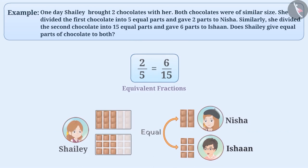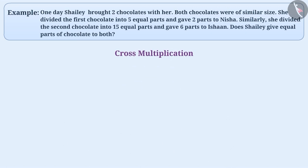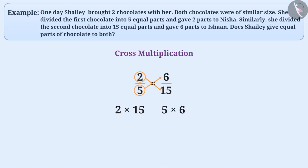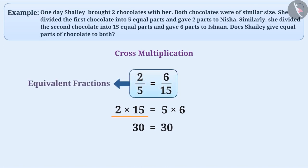There is another interesting way to do this, called the cross-multiplication method. In this method, we write the fractions as two by five equals six by fifteen. We multiply the numerator of the first fraction with the denominator of the second, and the numerator of the second with the denominator of the first. If the products are equal on both sides, the fractions are equivalent. Here, two times fifteen is thirty, and six times five is thirty. Since both products are equal, two by five equals six by fifteen.